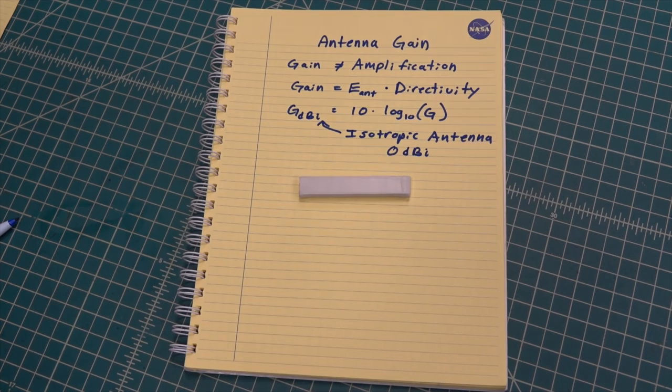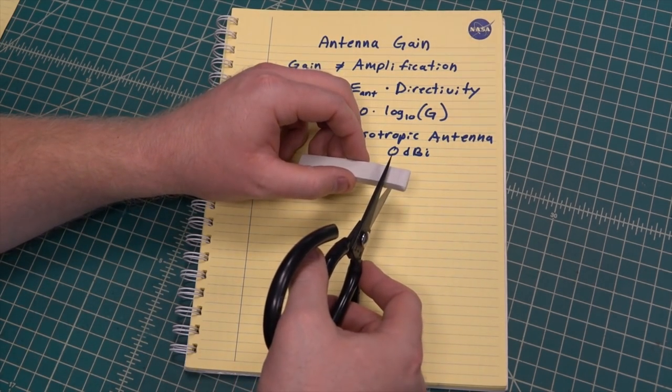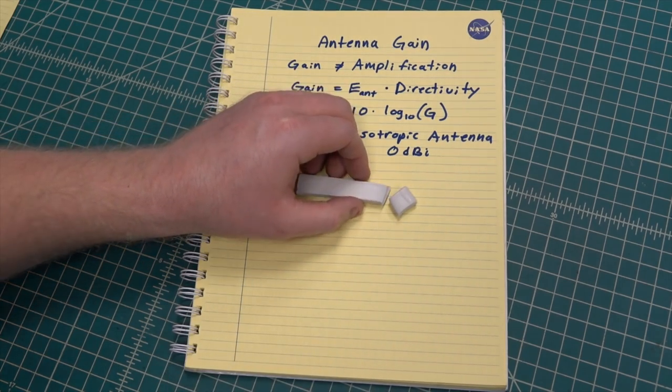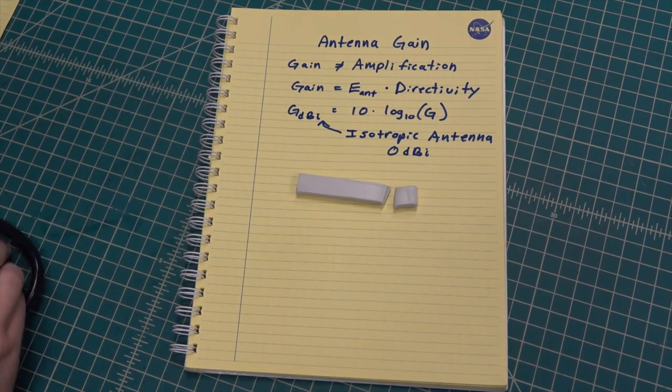A good way to visualize antenna gain is with this stick of putty. The maximum size of the stick is dependent on the power of the transmitter and the efficiency of the antenna. This small piece I just cut off represents the power losses.